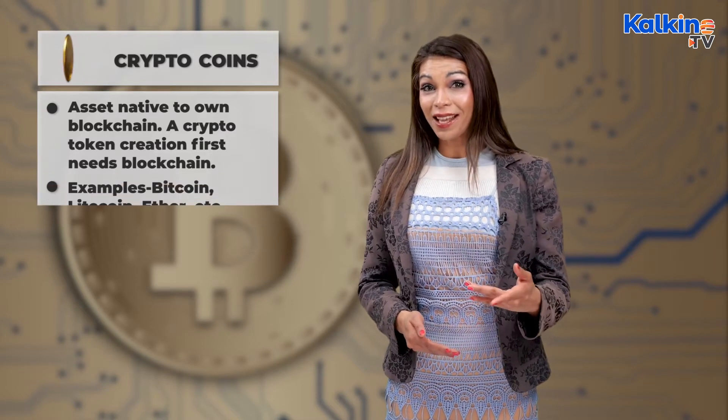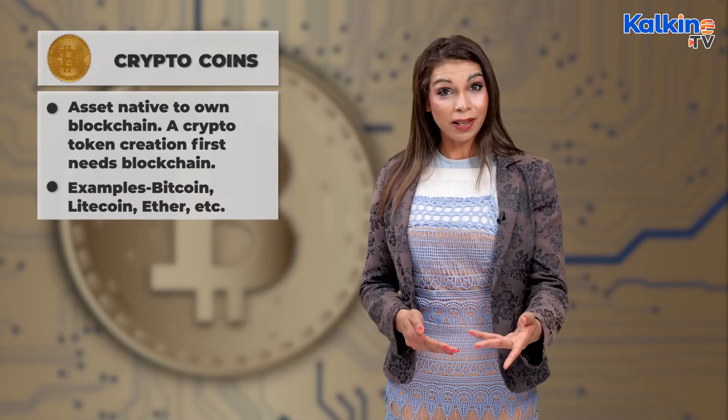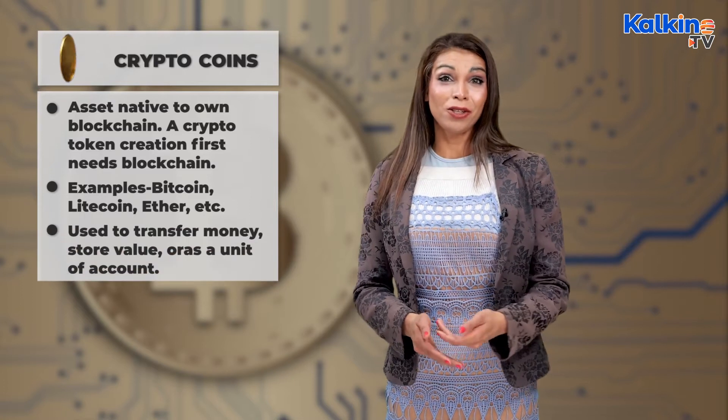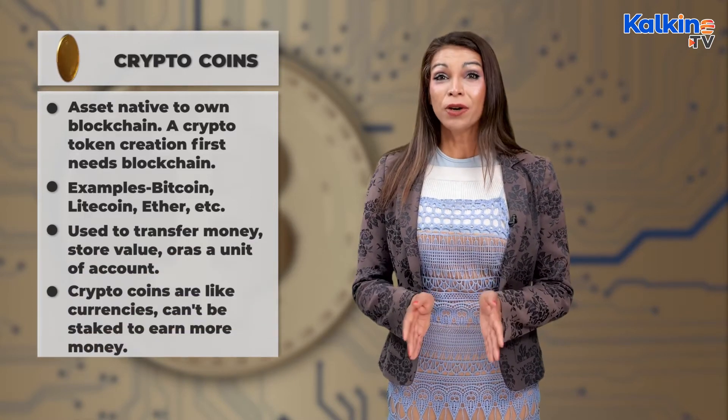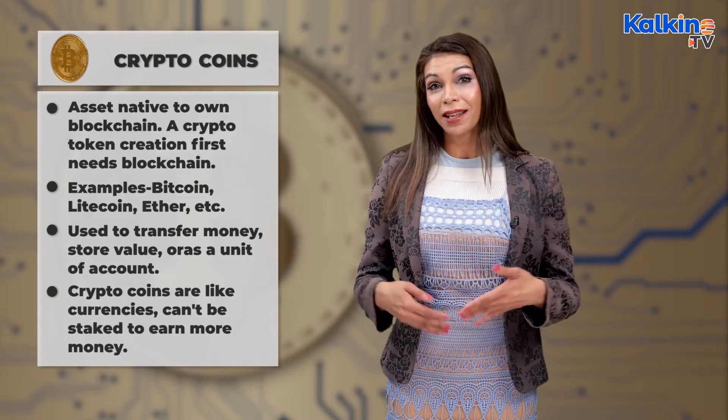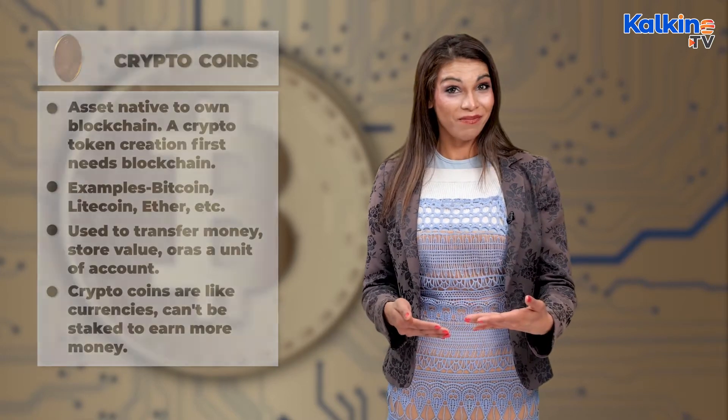Crypto coins, however, have the following attributes: they are an asset native to their own blockchain. A crypto coin's creation first needs a blockchain — examples include Bitcoin, Litecoin, Ether, etc. Coins are used to transfer money, store value, or as a unit of account. Crypto coins are like currencies, and they can't be staked to earn more money. As a result, crypto coins have limited utility compared to crypto tokens.